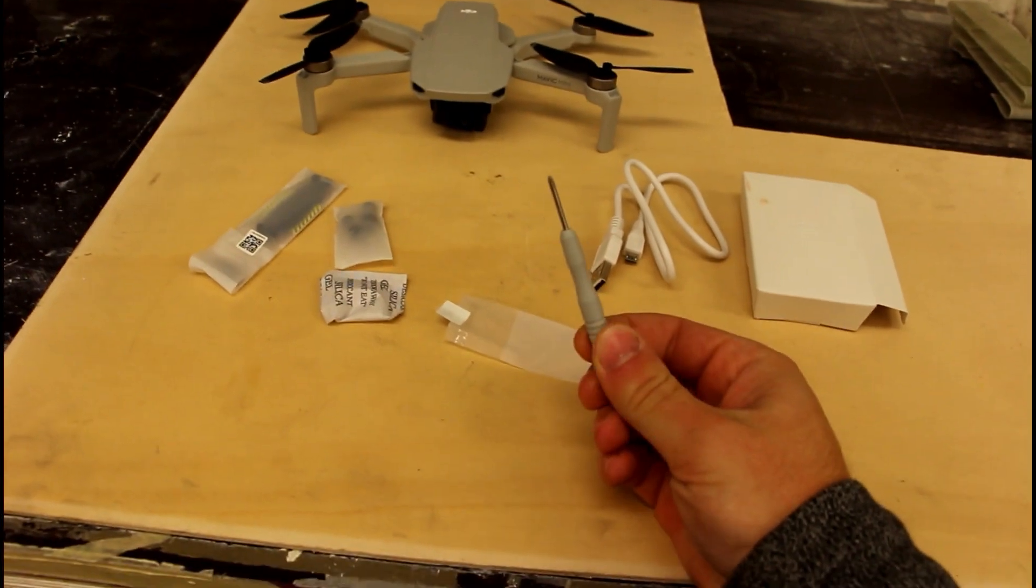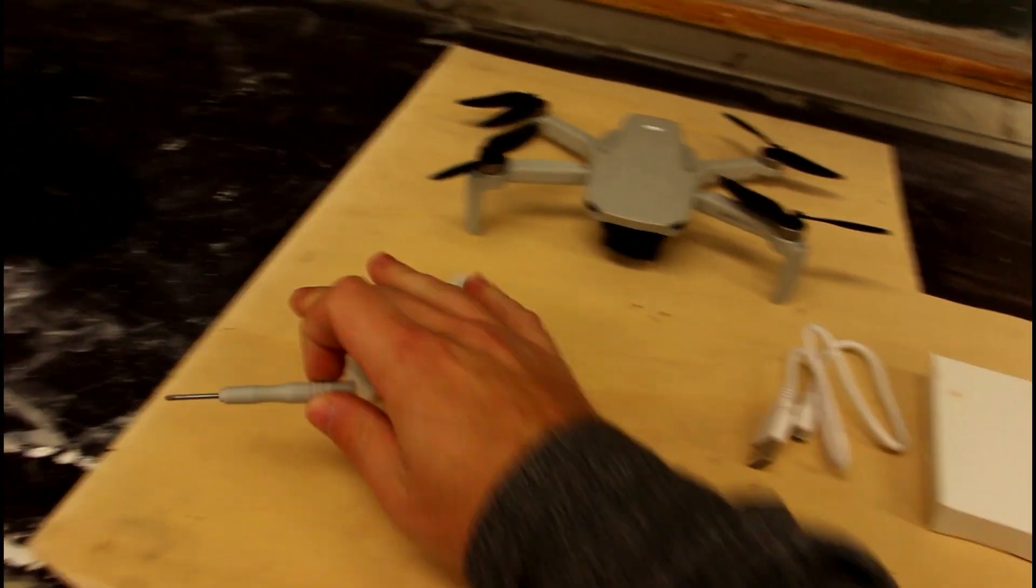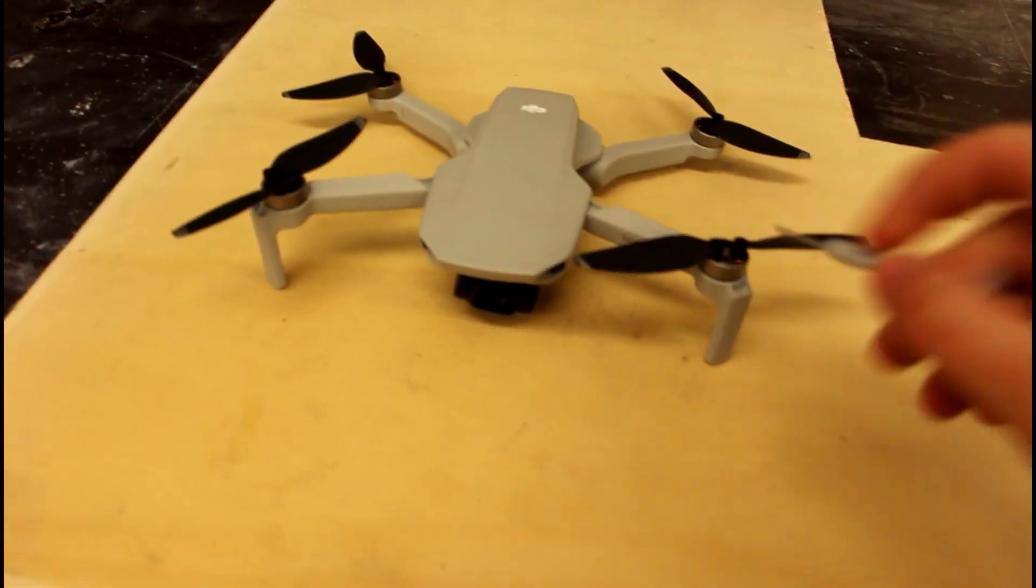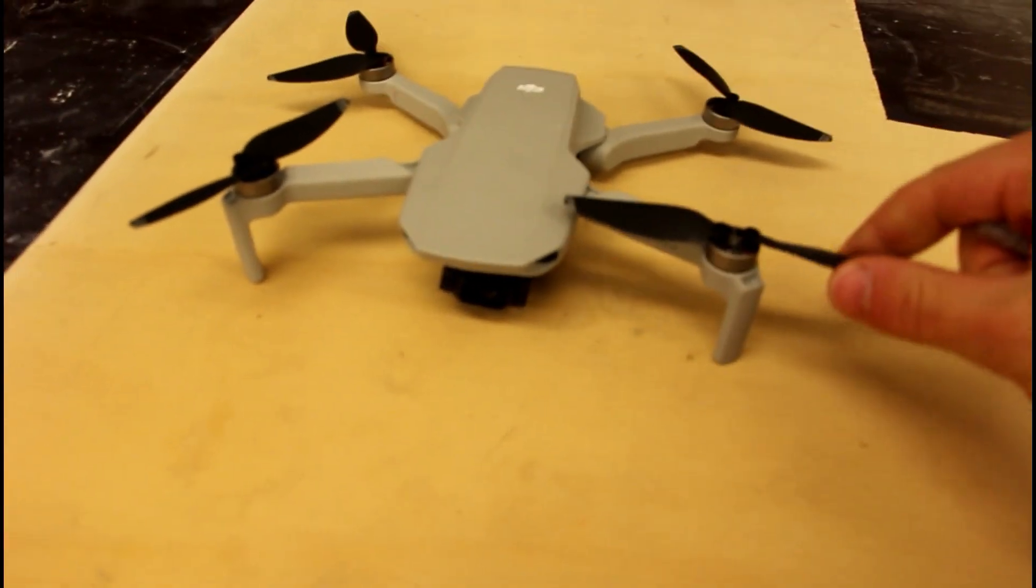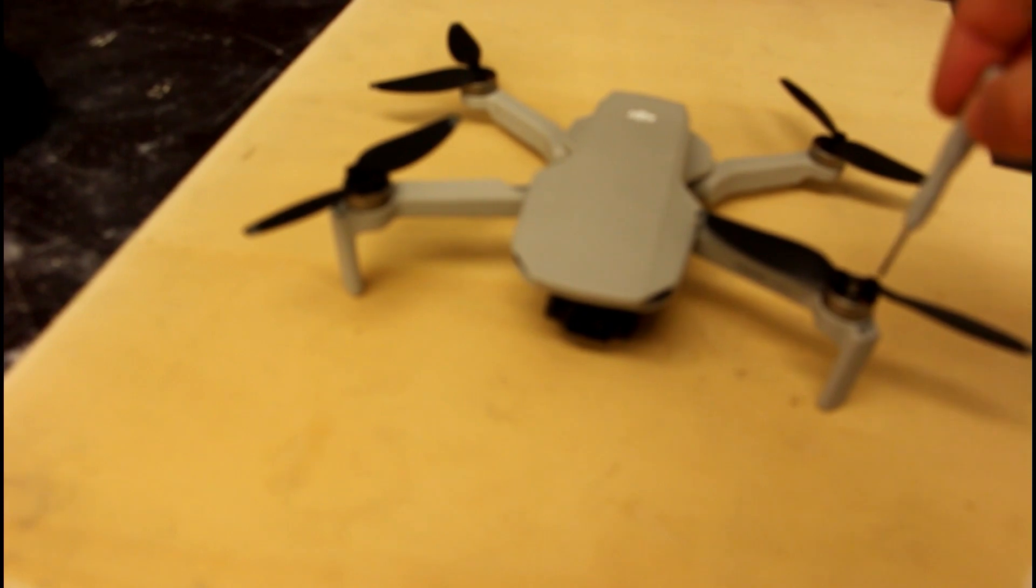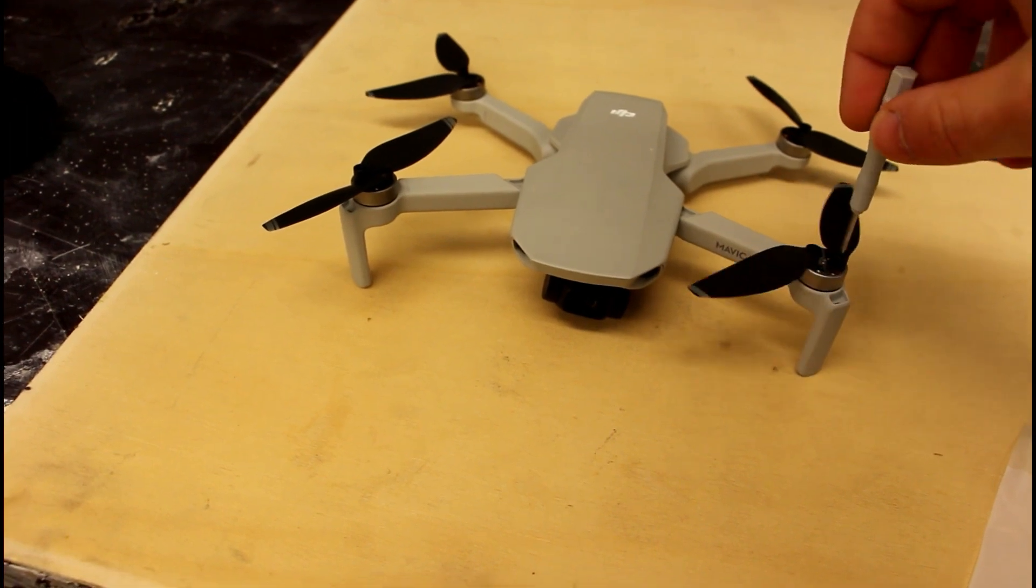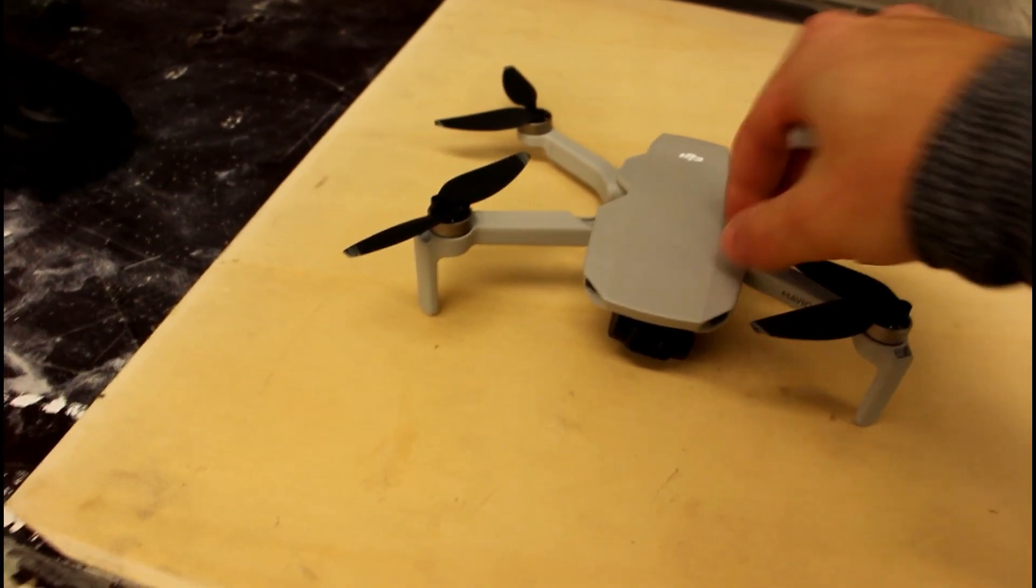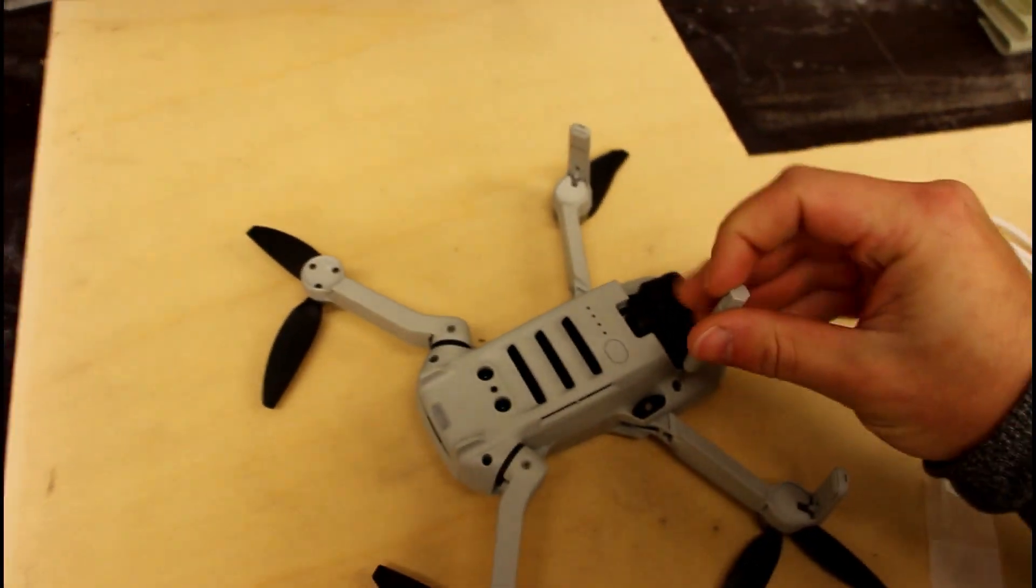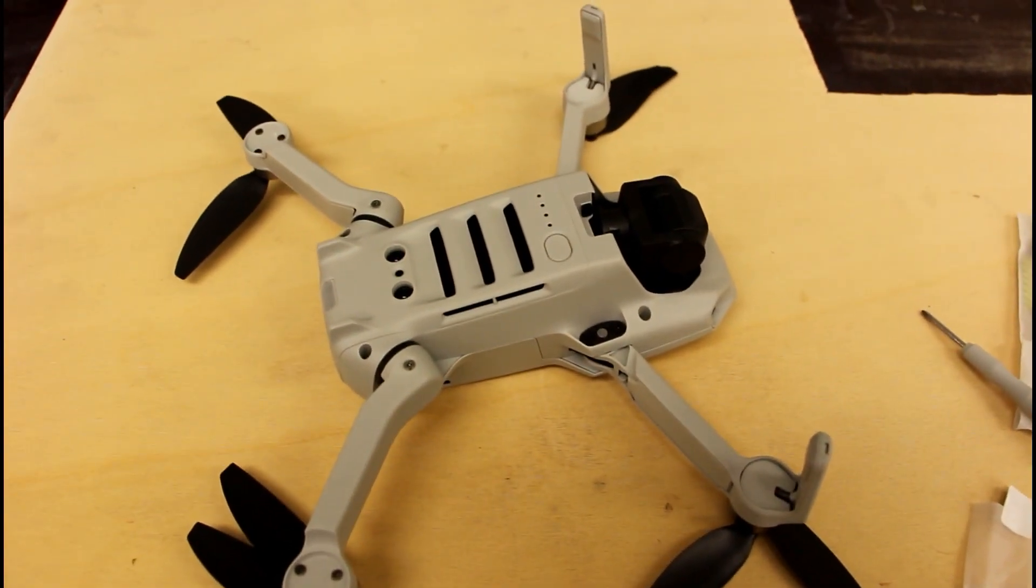We're gonna try to disassemble it using the Phillips screw that they give us in the back. First thing, I'll mark the propellers, which one goes where, because you should never put this propeller on any other motor or mount except for here. This is just a rule in aviation you should always know about. I'm gonna remove the propeller, remove the battery, and then here underneath we can see four screws, and we're gonna remove them and see what is inside.